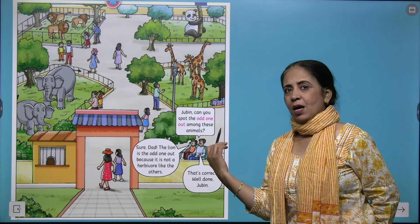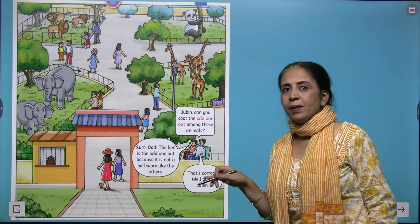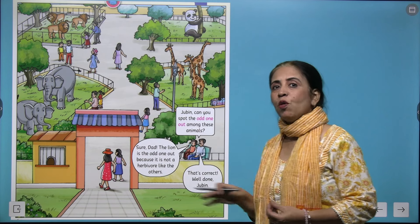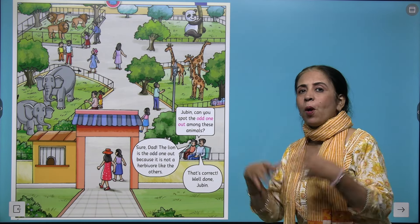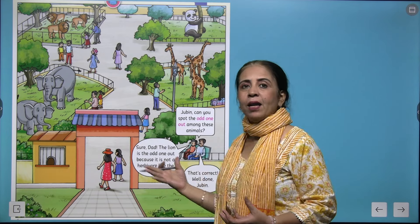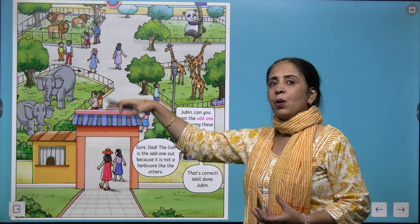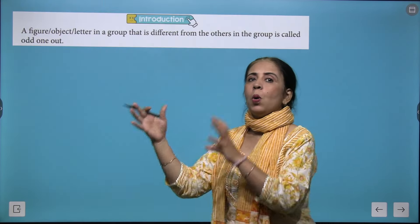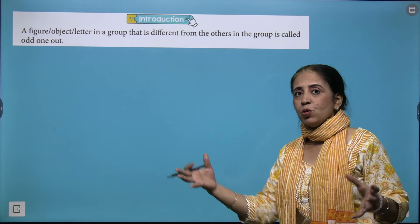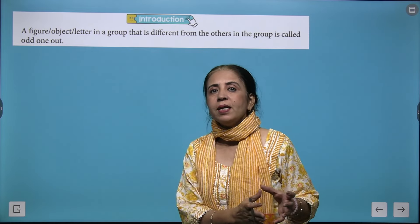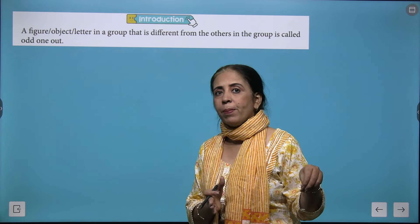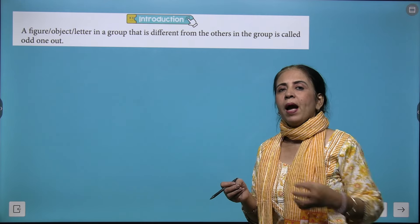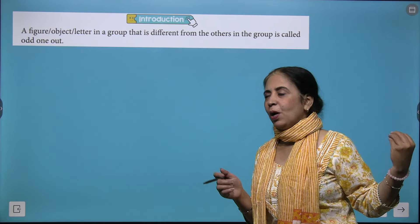Let's visit a zoo. Here you can see so many animals. Javin was asked by his father which of these animals is the odd one. He promptly said it is the lion, because the lion is not herbivorous and all other animals here are herbivorous. When you pick the odd one out, every time you have to look at the group, identify the properties, classify them, check which property is not satisfied, and pick that one out.